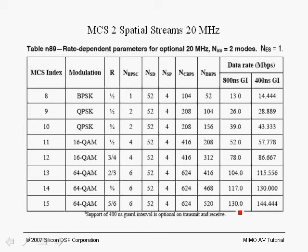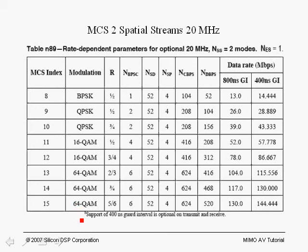We can go from 130 Mbps to 144.44 Mbps with the short guard interval. We also note that here we're dealing with open loop MIMO systems so that the modulation is applied to both spatial streams, unlike beamforming where, for example, we can have 64 QAM on one spatial stream and QPSK on the other.